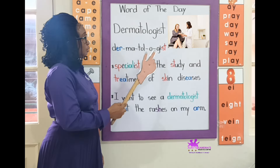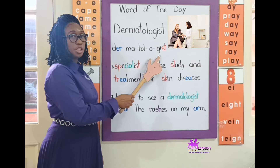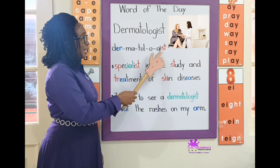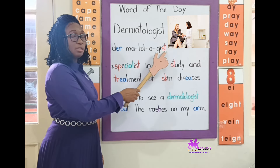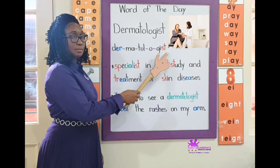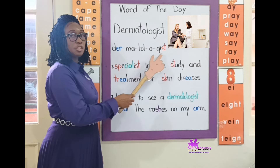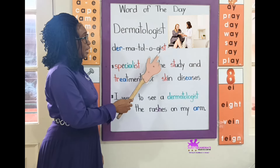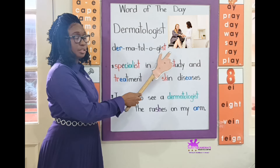O. This is a soft sound G — it says J. J-I-S-T, consonant blend: ST. Gist. One more time: J-I-ST, gist.